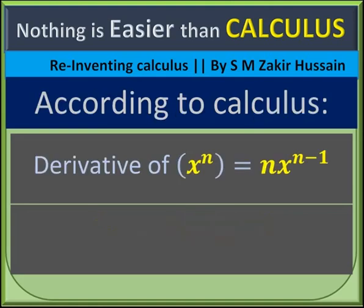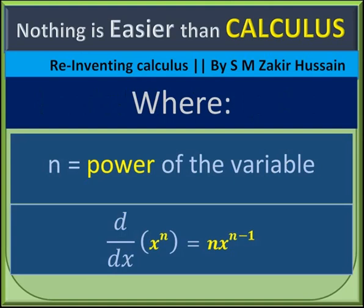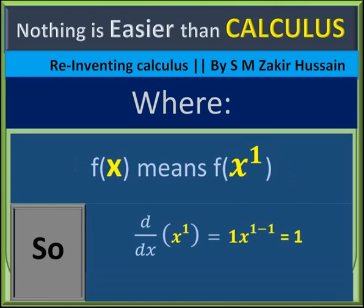According to the established rules of calculus, here's the formula for the derivative. That is, d/dx of x to the n equals n times x to the n minus 1. Here, n indicates the power of the variable. And the function f(x) means the function of x to the 1. So by using the Newtonian method, we get 1 as the derivative of x to the 1. Here, 1 indicates that there is change, but the change is constant.